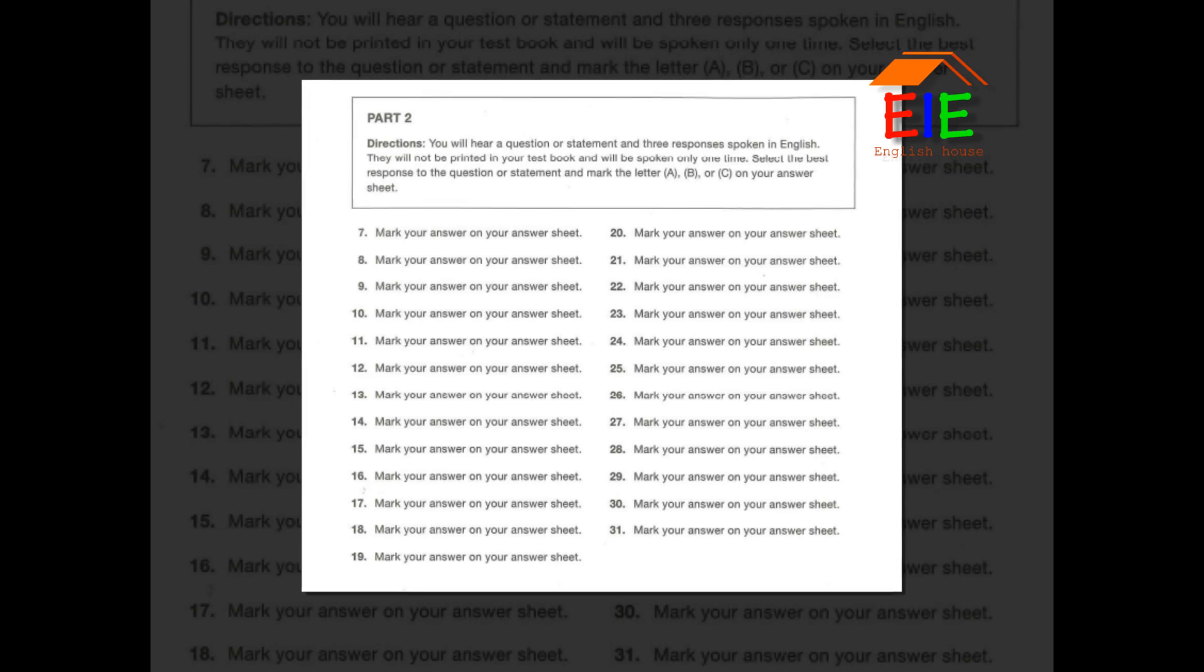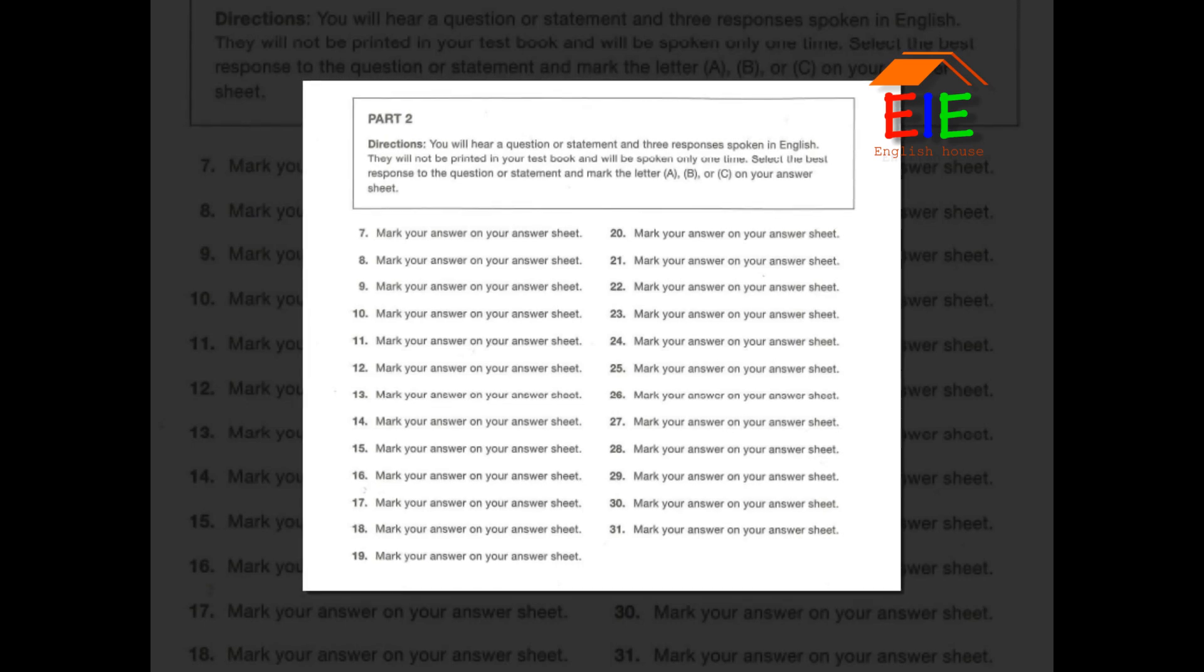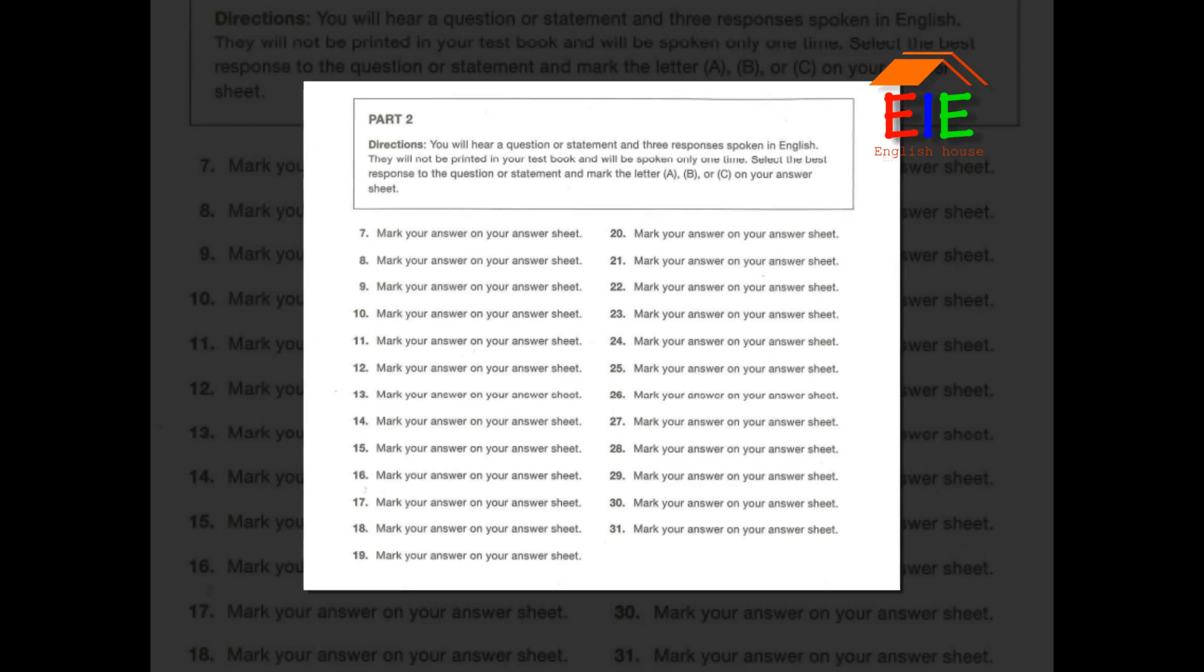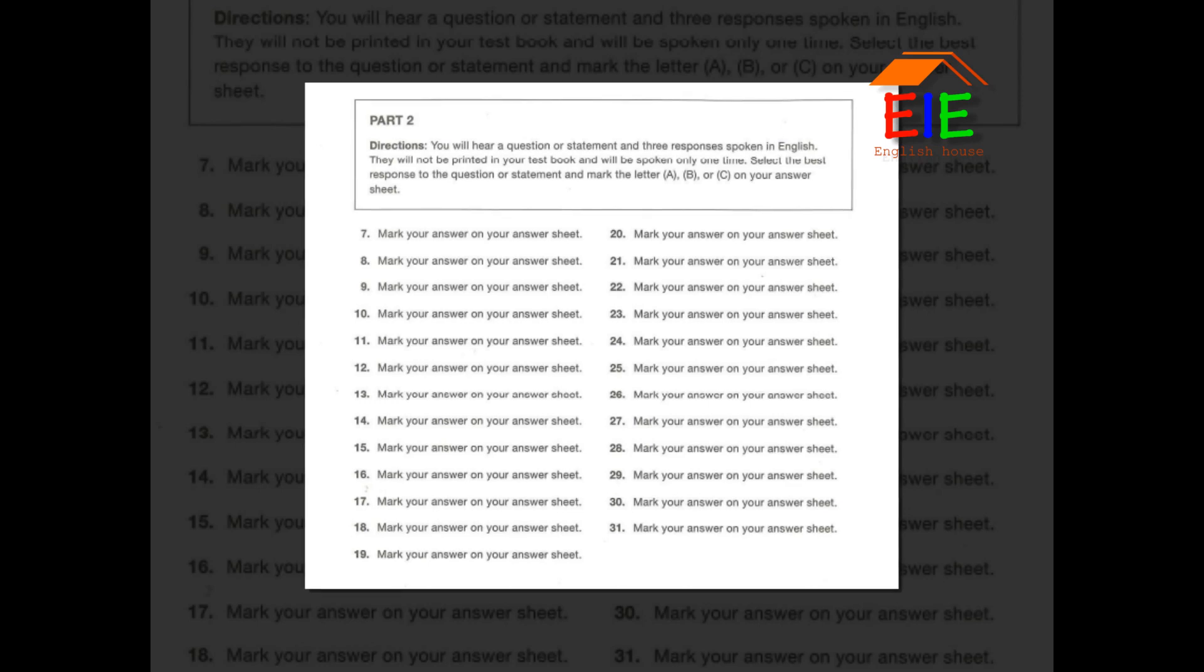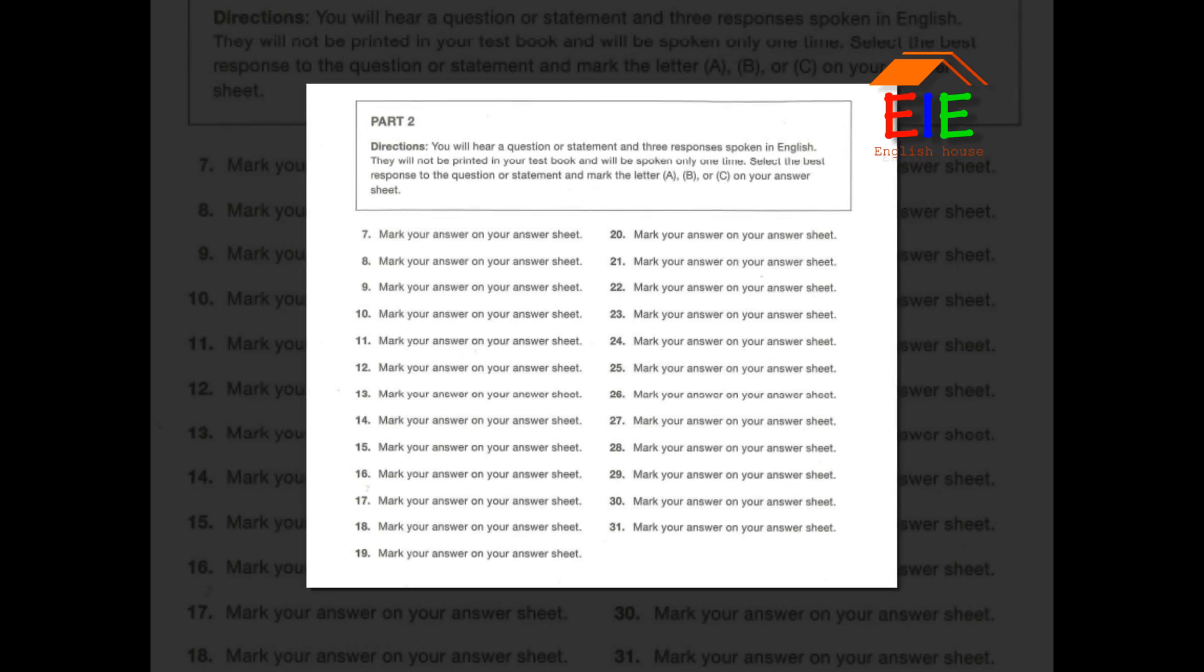Number 16: How can I get a refund on this shirt? A. They're on that shelf. B. Do you have a receipt? C. He went to the fundraiser.